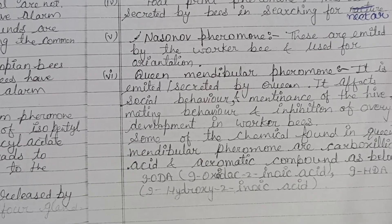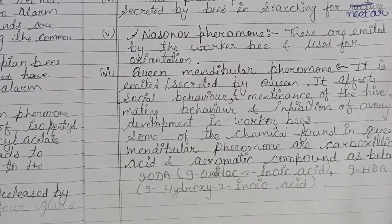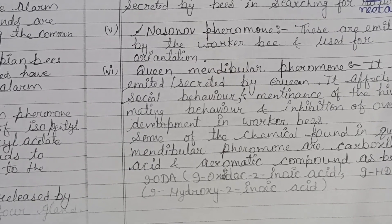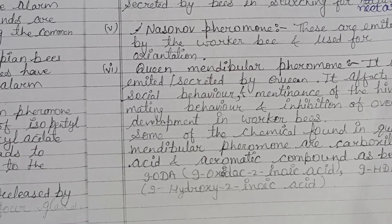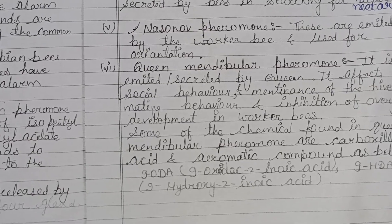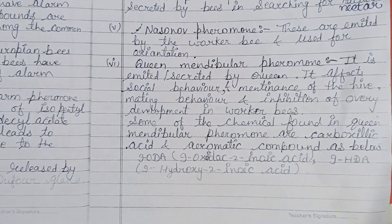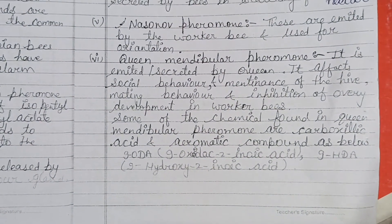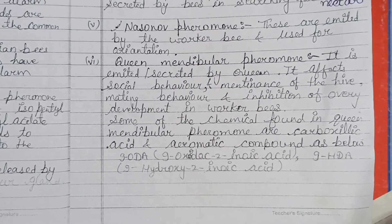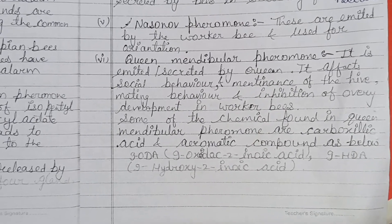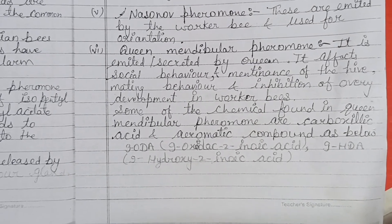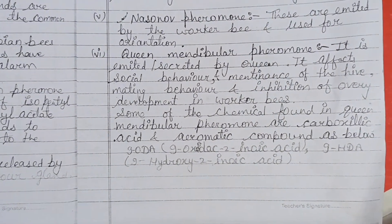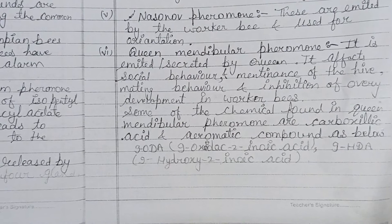The next pheromone is the Nasonov pheromone, emitted by worker bees and used for orientation — in the search for food or any other purpose.